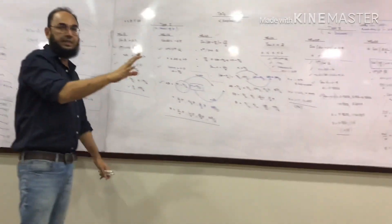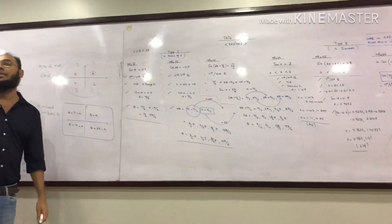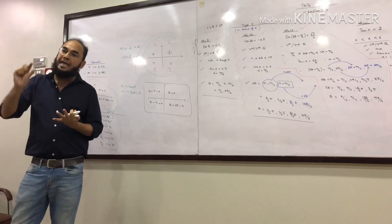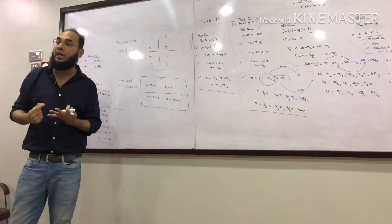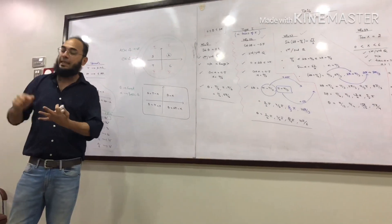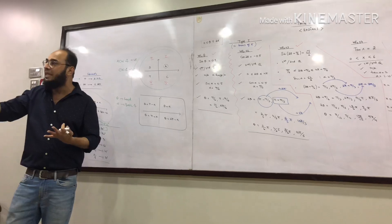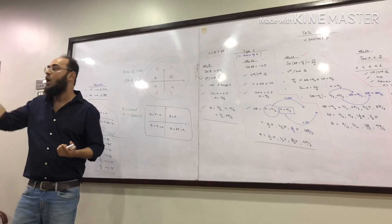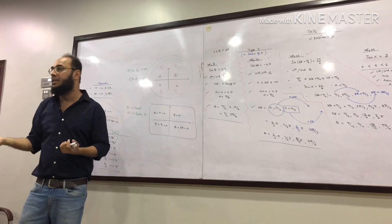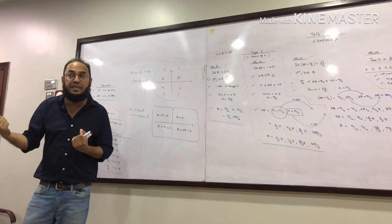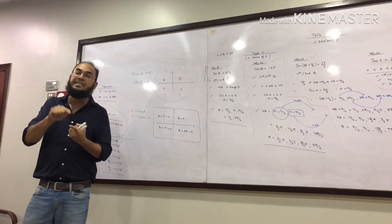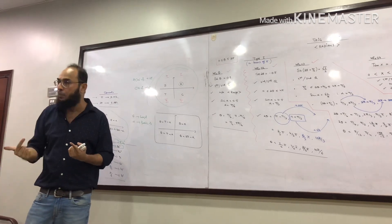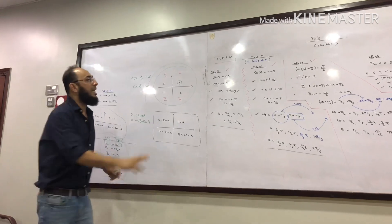Trigonometric equations fall into two categories. The first category: angles are asked in terms of pi, meaning they relate to 30, 45, or 60 degrees or their multiples. For example, 150 degrees is 5pi by 6, 60 degrees is pi by 3, and 120 degrees is 2pi by 3.